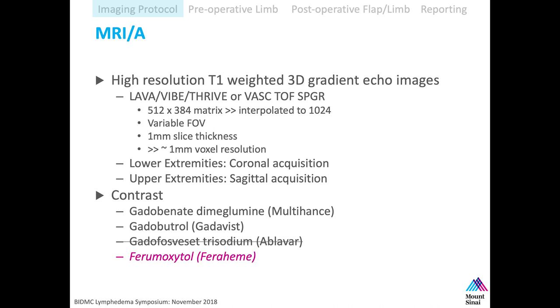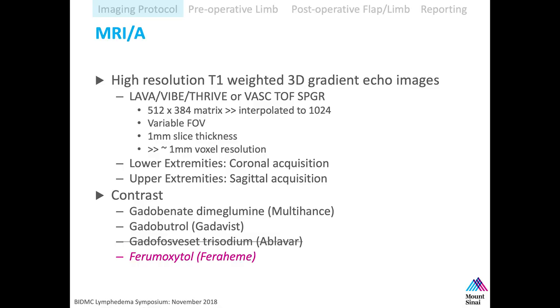With submillimeter isotropic voxels, you can reconstruct in multiple planes. If we're imaging legs, we image in the coronal plane — front to back. If we're imaging arms, we image side to side, just to decrease scan time. We don't want to image up and down a leg because that would take just an hour for each leg. Contrast-wise, there are gadolinium agents we inject intravenously that have blood pool capabilities, so we can image minutes after injection.